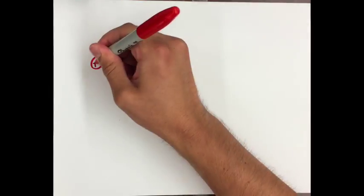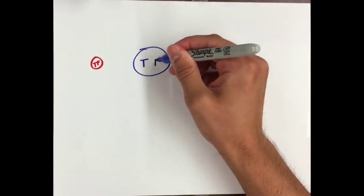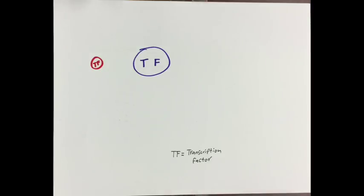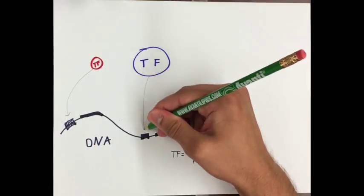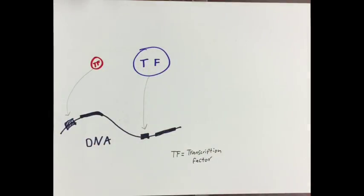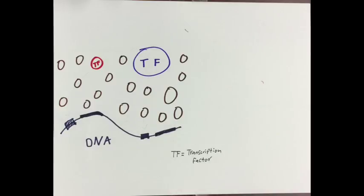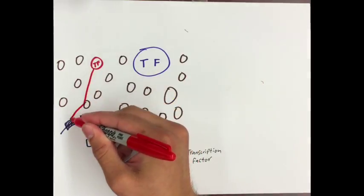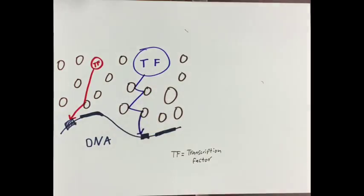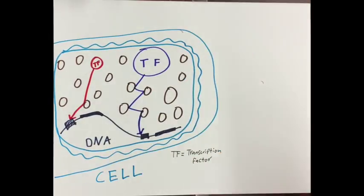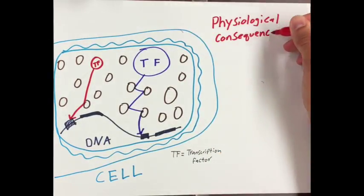So, if we imagine two transcription factors, one small in size and one larger, in a non-crowded environment, they should have no trouble finding their DNA target sequences and turning on their genes. However, in a more crowded environment, a larger transcription factor will have significantly more trouble diffusing to its target. But just how crowded is the cell? And does this crowding have physiological consequences in cell behavior?